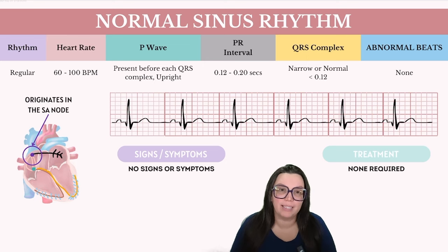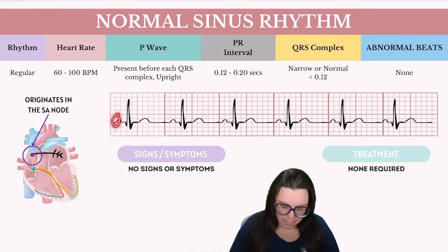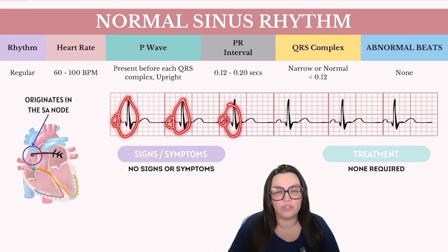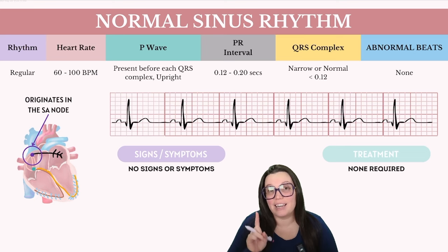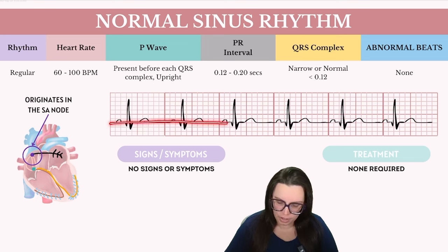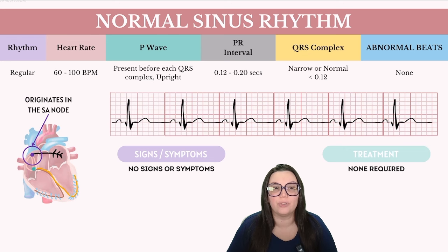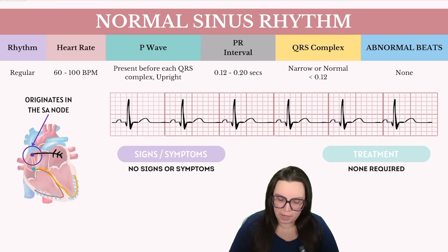Additionally, for a rhythm to be considered sinus, P waves must be present with a consistent P to QRS ratio of one to one. That means each P wave must be followed by a QRS complex all the way down our six-second strip. It should be synchronized as well as orderly. Our P wave needs to be upright from our isoelectric line. If we see any variations in the P wave's appearance, then we're probably looking at a different kind of rhythm.